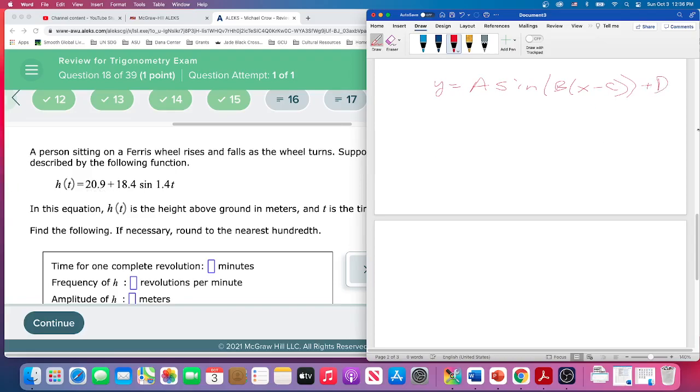So what is this function really in terms of Y equals A sine of B times X minus C plus D? So I'm going to reorganize this. So 20.9 is our D. And that means we've got 18.4 sine, our B is 1.4, and we don't have a phase shift. C is zero. So that's why they just put that X there.